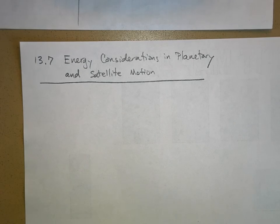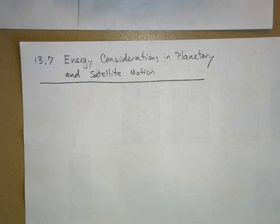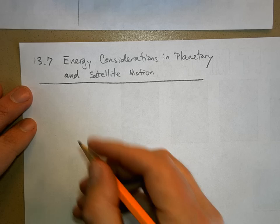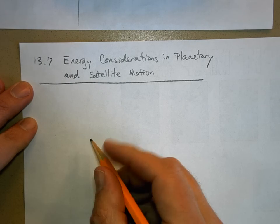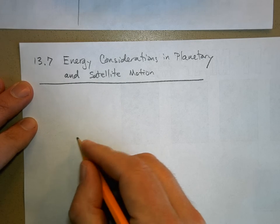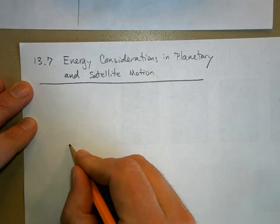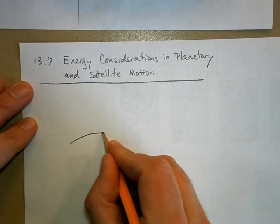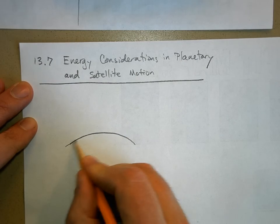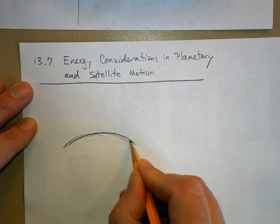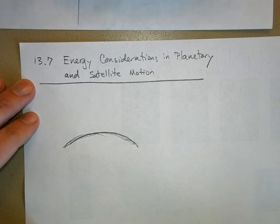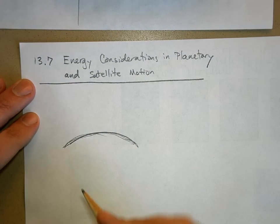First I want to review orbital velocity — how fast we need to go to be in orbit. Imagine the Earth's surface right here, and we watch a rocket launch. Here's the curvature of the Earth, not very well drawn, and we've got this pesky atmosphere.